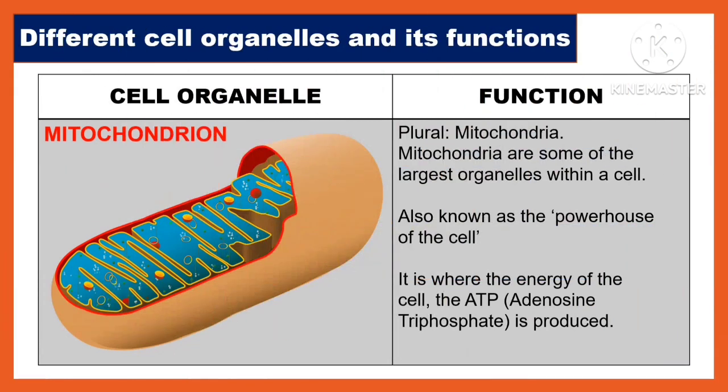Another cell organelle is the mitochondrion — the plural term is mitochondria. Mitochondria are some of the largest organelles within a cell. It is also known as the powerhouse of the cell. It is where the energy of the cell, the ATP or adenosine triphosphate, is produced.